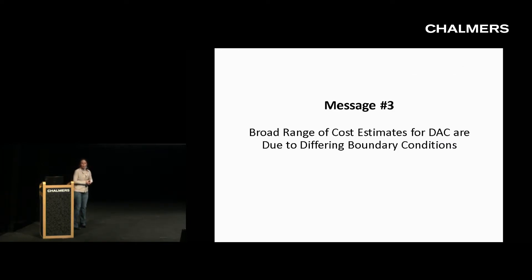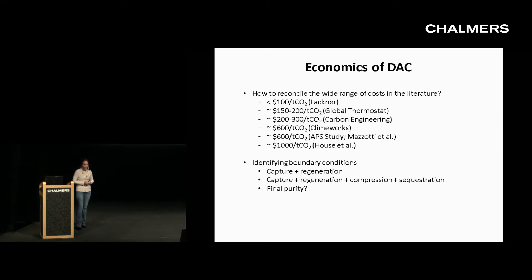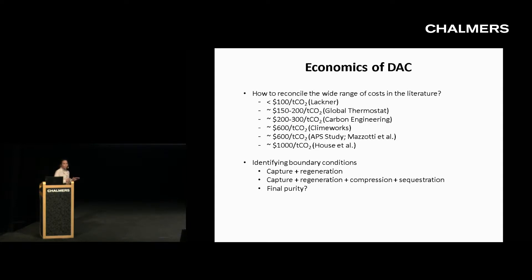The next message — the most controversial topic in the direct air capture community — is the distribution of cost estimates and why it exists. From the literature, the distribution ranges from actually under $100 a ton all the way up to around $1,000 a ton. So how do we get an order-of-magnitude span of costs? I'm going to dig into this.